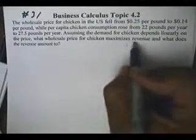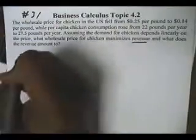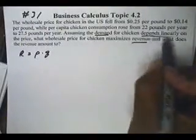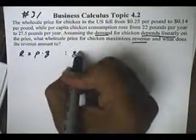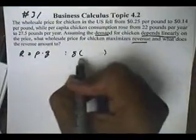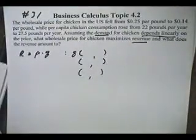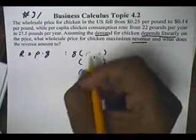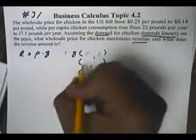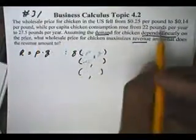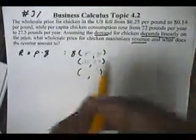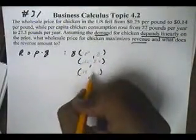Well, first of all, we're looking for revenue. So we need the revenue function. The revenue function is made out of price times the demand function. And we're told that the demand is going to be linear. So that means that when we create our q, it needs to be a linear function made from points. Where the input will be price, and the output is actually the demand. We knew at a price of 25 cents per pound, the quantity that people were eating was about 22 pounds. And when the price became 14 cents, consumption went up to 27.5.